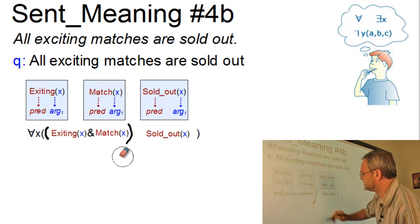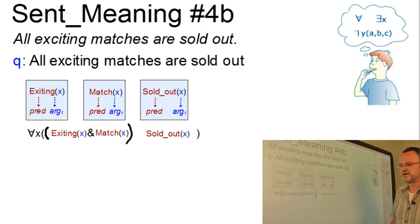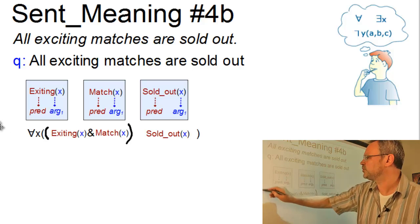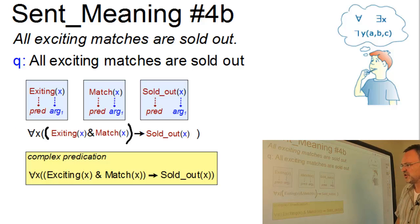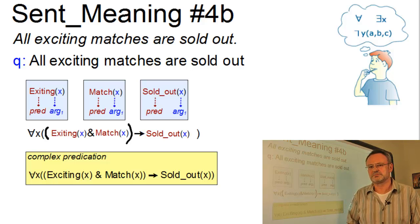This is a bit big, isn't it? Okay. Well, and this first term, x is exciting and x is a match, can now be combined with the second one in terms of an implication. Which then can be read, for all x it holds, if x is exciting and x is a match, then x is sold out. Well, and this is a reasonable result.